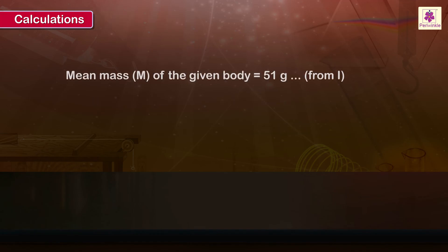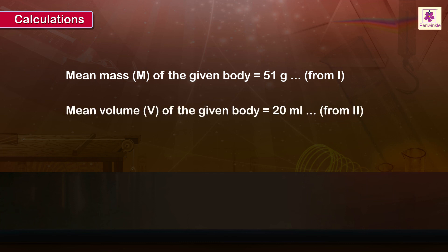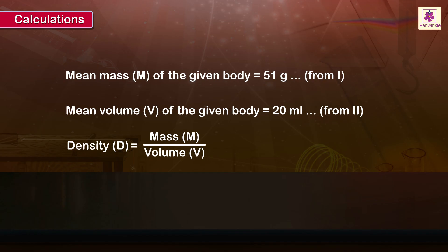Calculation: Mean mass M of the given body is equal to 51 grams. Mean volume V of the given body is equal to 20 milliliters. Density D = mass / volume = 51 / 20 = 2.55 grams per milliliter.